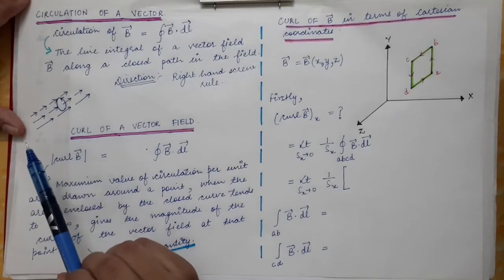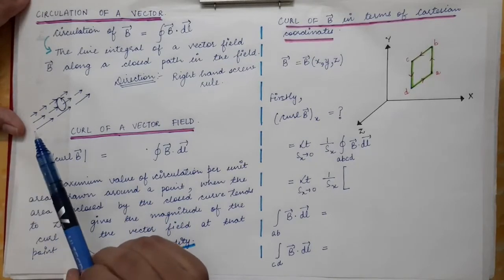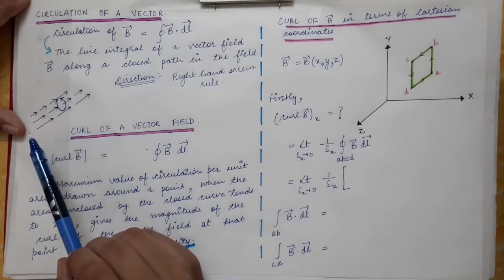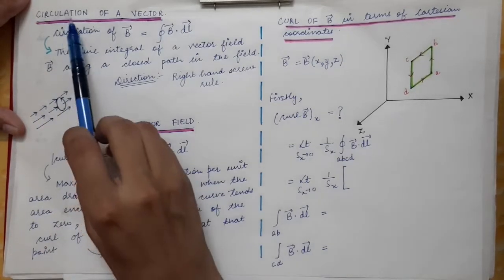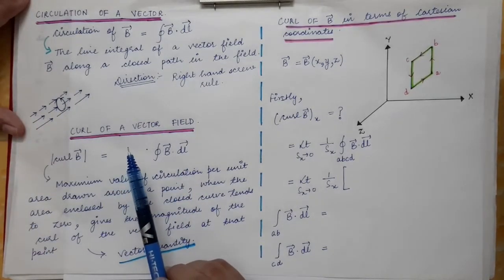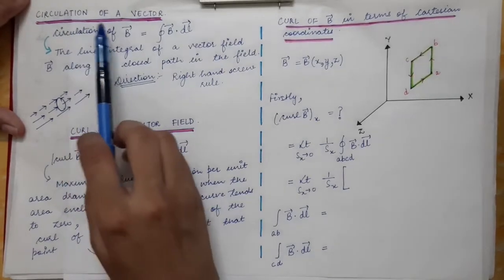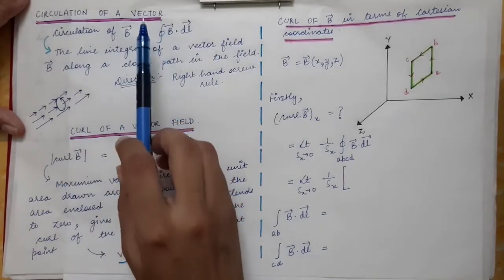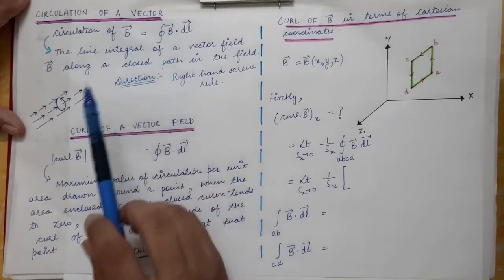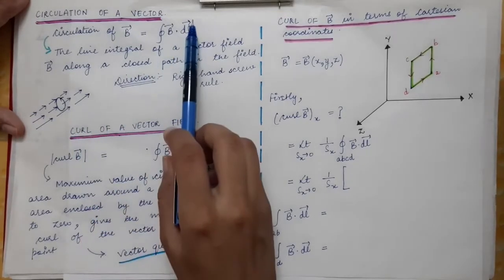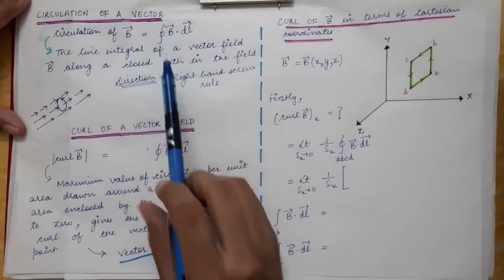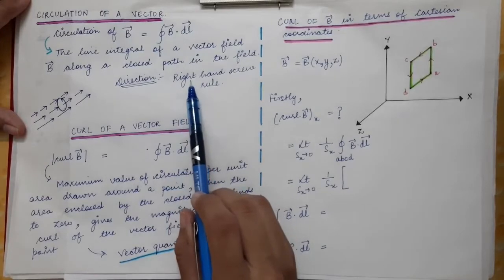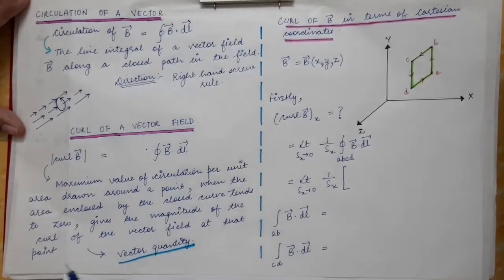To find the direction of circulation using the right-hand screw rule, we curl the fingers of the right hand along the chosen path — in this case, the anti-clockwise direction. The direction of the thumb gives you the direction of the circulation for that particular closed path. As you change the closed path or direction of travel, the direction as well as magnitude of the circulation will also change.